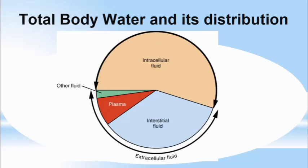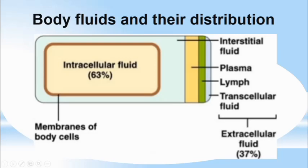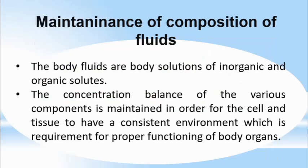Here you can see the distribution of water in the body. Most of the water — around 63% — is in the form of intracellular fluid. The extracellular fluid, which is around 37%, includes interstitial fluid, plasma, lymph, and transcellular fluids. So there are two major water distribution compartments: intracellular and extracellular.